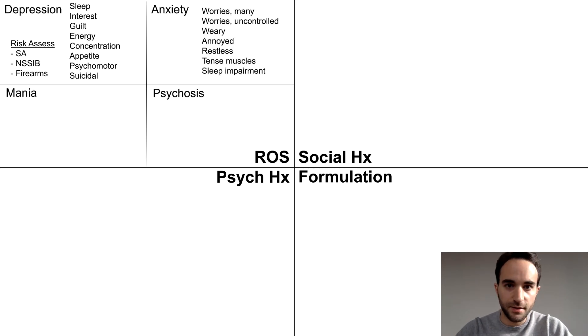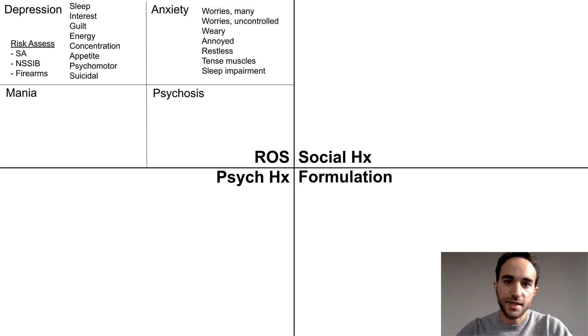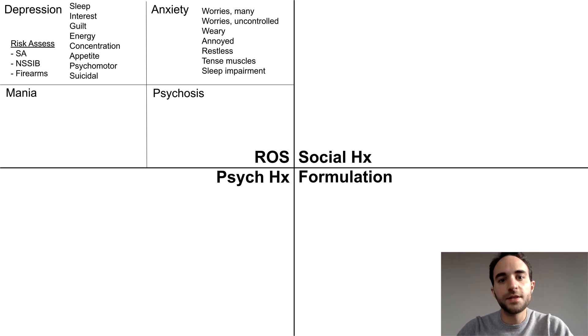Next is anxiety. You can use the mnemonic WORRYWARTS to ask about the symptoms of generalized anxiety disorder. This is also a good time to ask about panic attacks.